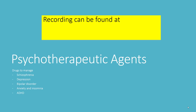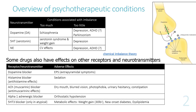In this recording we're going to look at drugs to treat schizophrenia, depression, bipolar disorder, anxiety, insomnia, and ADHD. This overview slide gives a background for understanding the chemical imbalance associated with these conditions.